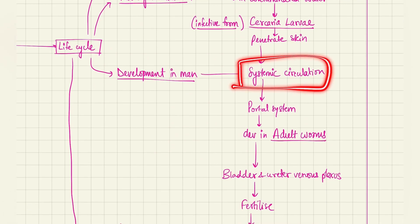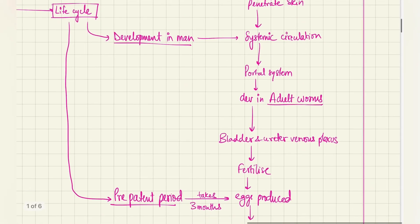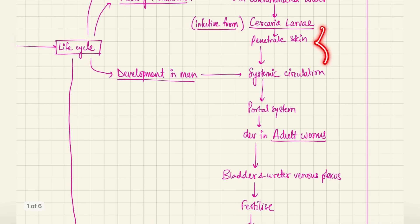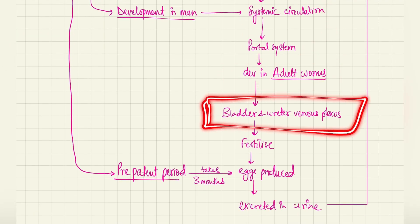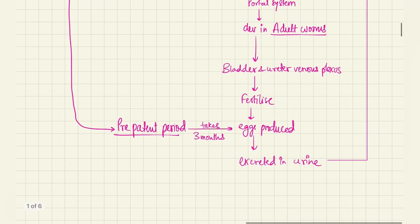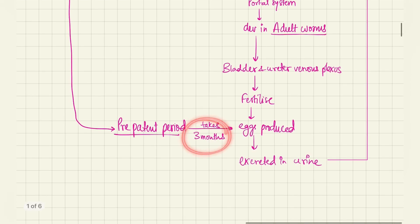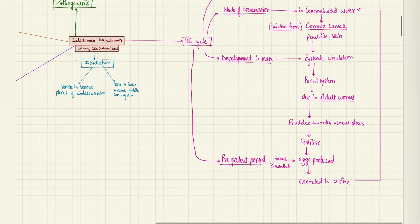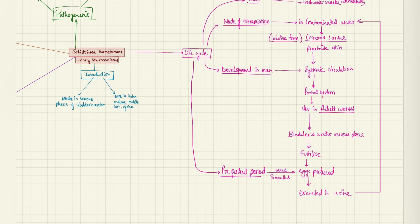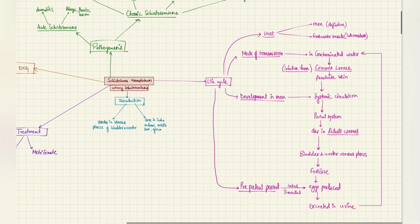After going in the systemic circulation, it progresses to enter through the portal system and it goes to the bladder and ureter venous plexus. Before that it converts into the adult worm. So the cercaria larva came into the skin, systemic circulation. In the portal system, it converts into the adult worms and then it finally reaches the bladder and ureter venous plexus, its main site for fertilization where it fertilizes and eggs are produced. This is the pre-patent period because it takes three months for the eggs to get produced. The urine goes into contaminated water and then the eggs hatch into the cercaria larva and the cycle continues.